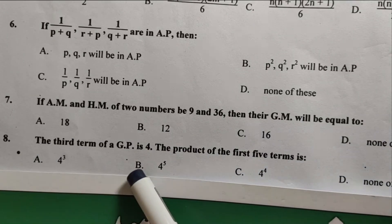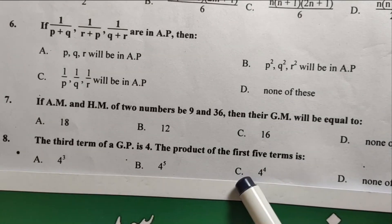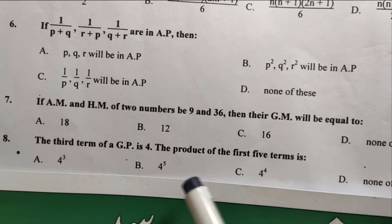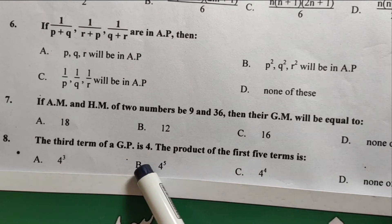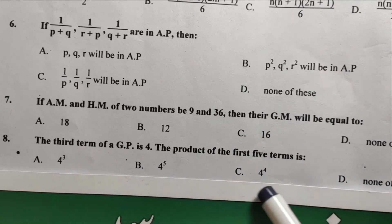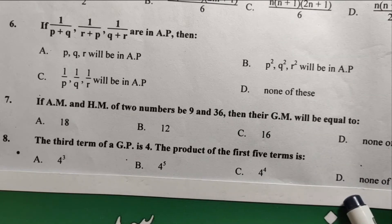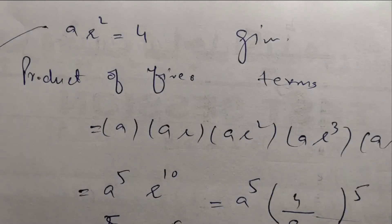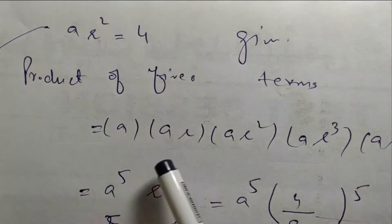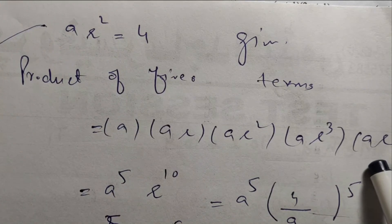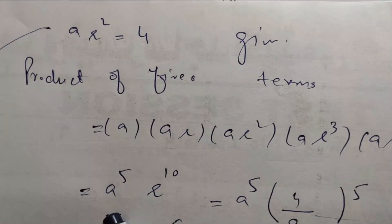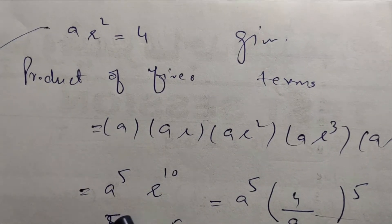The third term of a geometric progression is four. The product of the first five terms is — which option is correct? The third term of the GP is four, so A·R² equals four. The product of the first five terms is A times AR times AR² times AR³ times AR⁴, which gives A⁵·R¹⁰.